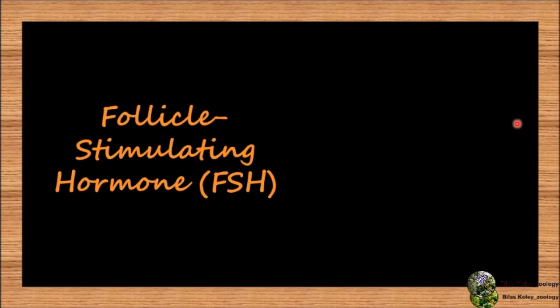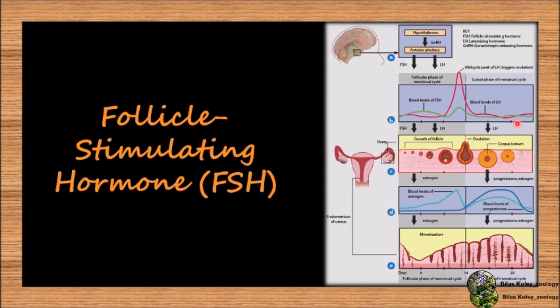We will discuss follicle stimulating hormone. It helps in gametogenesis in gonads. For example, in ovaries it stimulates formation of gametes, that is ova. It also stimulates secretion of estrogen from ovaries.